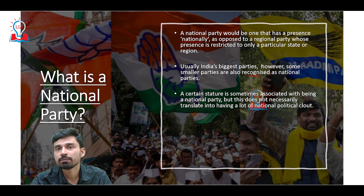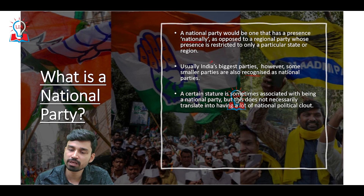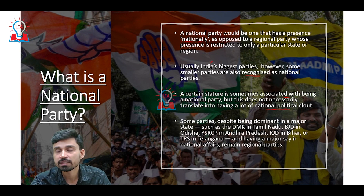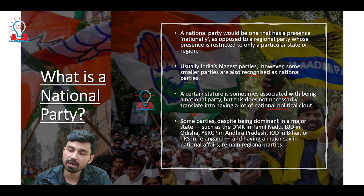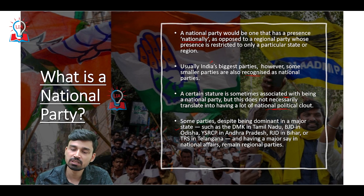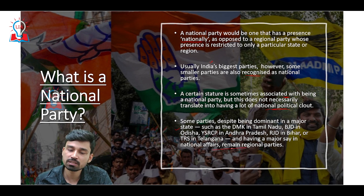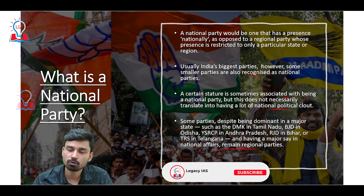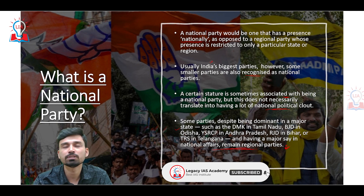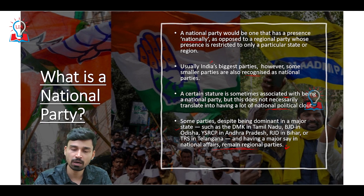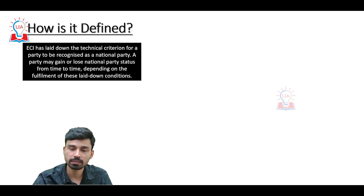Once a party is recognized as a National Party, a certain stature is associated with it, but this does not necessarily translate into having a lot of national political clout. Some parties, even though they are not enjoying the status of National Party, are dominant in major states — such as DMK in Tamil Nadu, Biju Janata Dal in Odisha, YSR Congress Party in Andhra Pradesh, Rashtriya Janata Dal in Bihar, or TRS in Telangana — and have a major say in national affairs because they send more representatives to the Lok Sabha from states with large parliamentary seats.